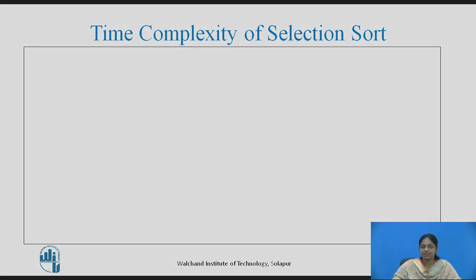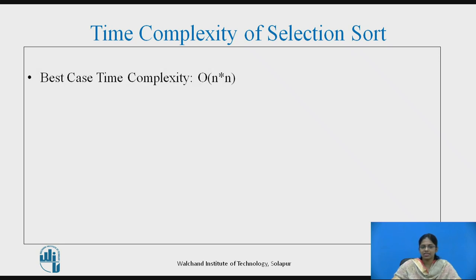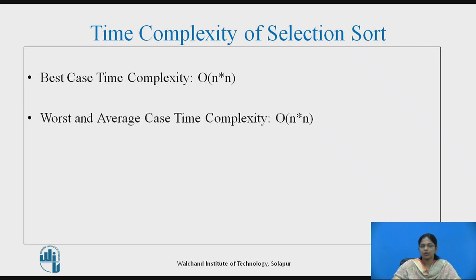Let us see the time complexity of Selection Sort. In the best case, the time complexity is O(n²), and in the worst case and average case, the time complexity is also O(n²).